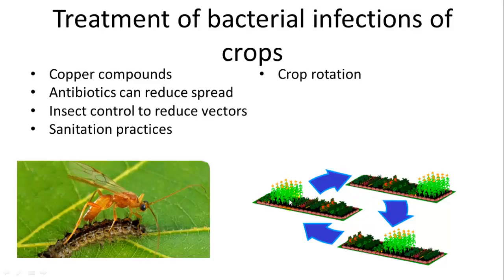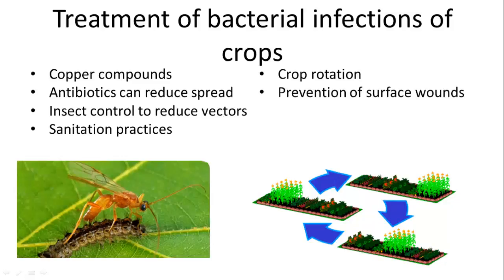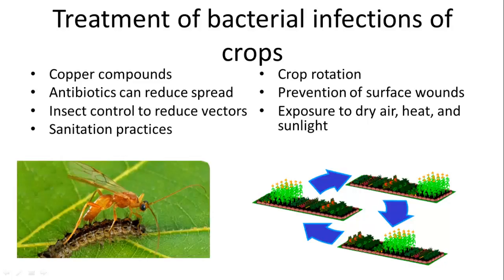Smart sanitation practices include washing your tools with bleach to kill bacteria. Crop rotation helps as well — with a diversity of crops, a bacterial infection in corn probably won't spread to other species. Rotating crops also means you aren't using the same soil in the same area every year, preventing bacteria in the soil from continuing. Preventing surface wounds on plants keeps bacteria out of internal structures, and exposure to dry air, heat, sunlight, and UV rays can also reduce bacterial infections on plants.